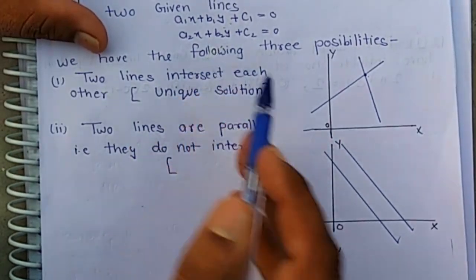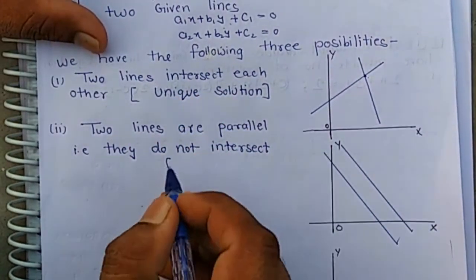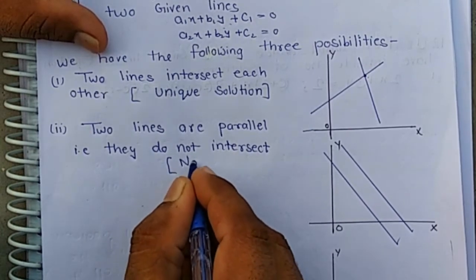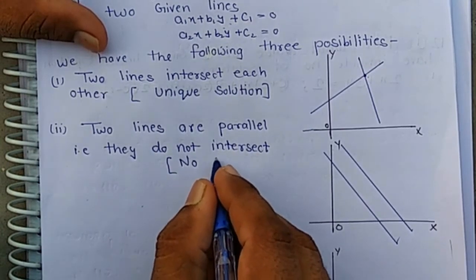If two simultaneous linear equations represent two parallel lines, then we have no solution.